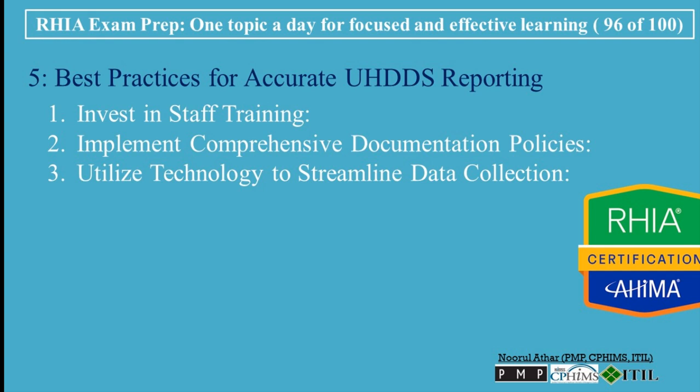Third, utilize technology to streamline data collection. Using EHR systems integrated with coding and billing software can improve the accuracy and efficiency of UHDDS reporting. Automating data collection wherever possible can reduce the risk of errors and ensure that all relevant information is captured in the patient record. Fourth, conduct regular audits of UHDDS data to identify and correct errors before they affect reimbursement or compliance.